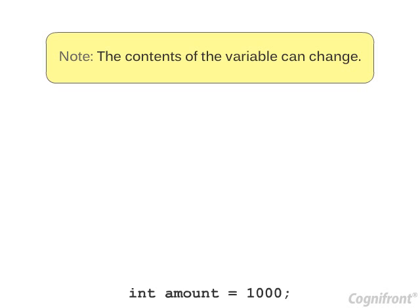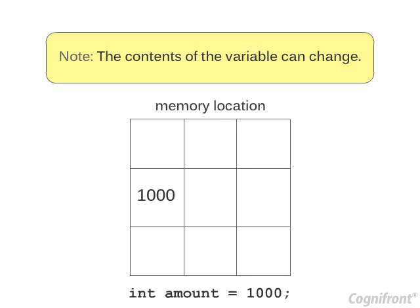For example, 1000 is stored in the memory location which is given the name as amount. Here, 1000 is constant as the value does not change. But the memory location amount can contain any value. Hence, it is called as the variable.